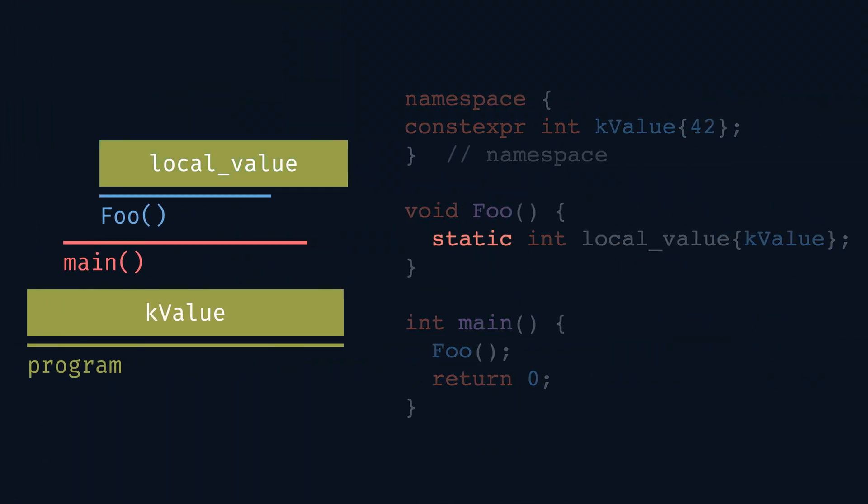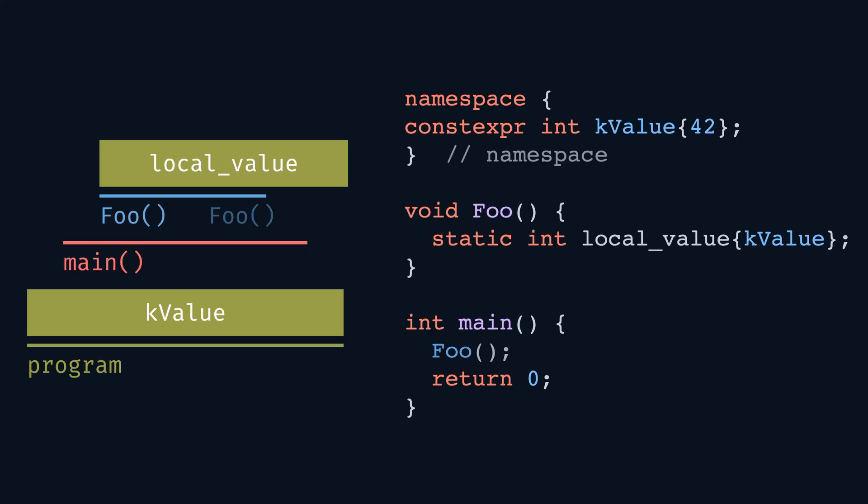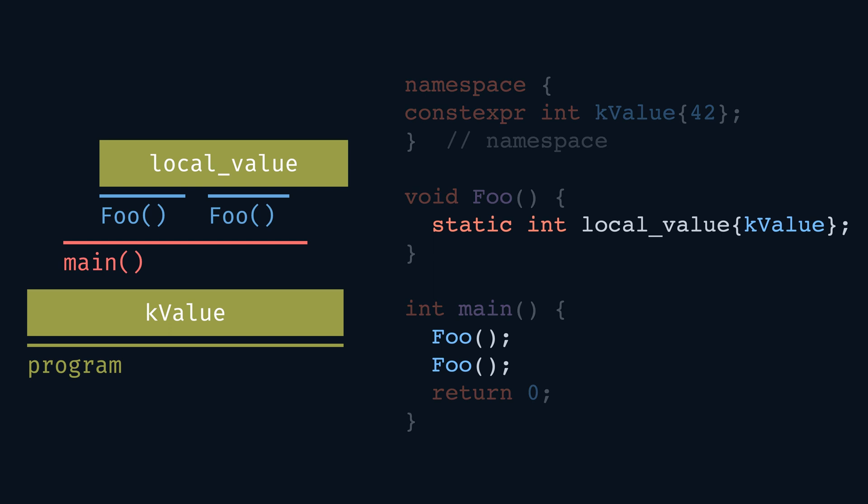Finally, use of static can extend the storage duration of a local variable within a function scope to have static storage duration. If we add static in front of our local value definition, it will have static storage duration even though it is defined in a local scope. Such a static variable will be initialized when first encountered during the program flow, and destroyed when the program exits. One interesting peculiarity is that if the flow of our program encounters the line that defines the static variable multiple times, this line will only be executed once — because the variable already exists, the definition is skipped and the existing static variable is simply used further.